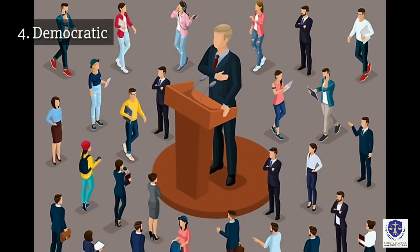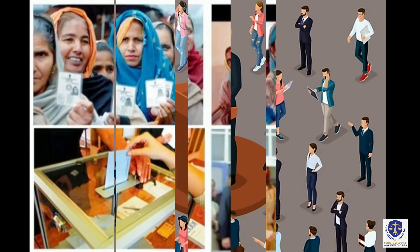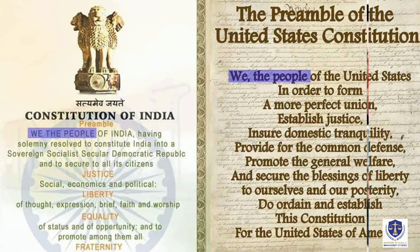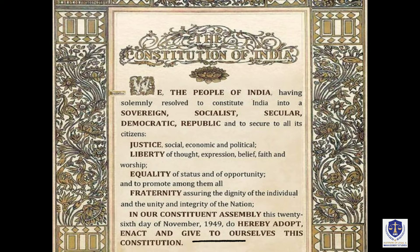Fourth, Democratic. Democracy is by the people and for the people. A democratic government is a government which is elected by the people. It conceptualizes the idea of the rule of people and by the people. The right to vote, i.e. to elect the representatives in the government, is also guaranteed to every citizen who is 18 years or older. The phrase 'we the people of India' and 'give to ourselves' reflect the democratic spirit of the preamble and the constitution.